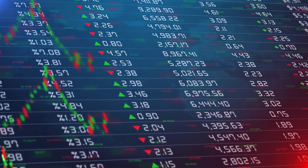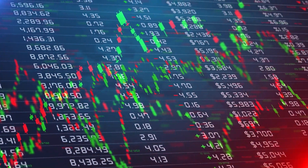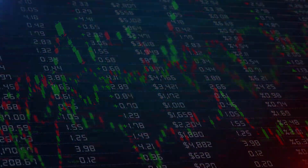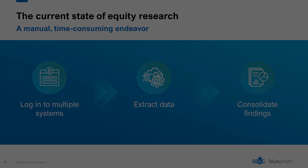Today, most equity analysts still create research reports through an inefficient manual process. The analyst starts by logging into various systems to extract data about the company and its competitors. They pull financial statements from one system, grab press releases and SEC filings from another, and then export charts and graphs from Excel. It's a repetitive process of clicking, copying, pasting, and it's very time-consuming and prone to errors.